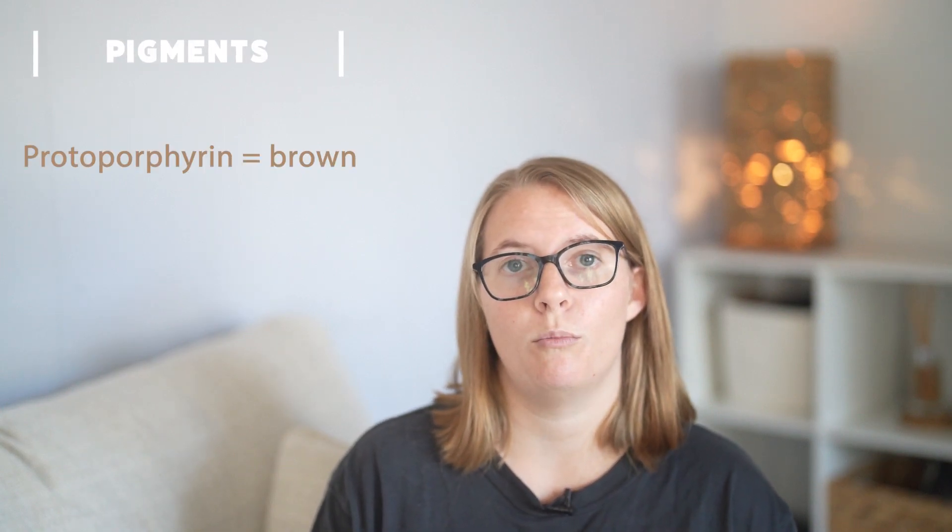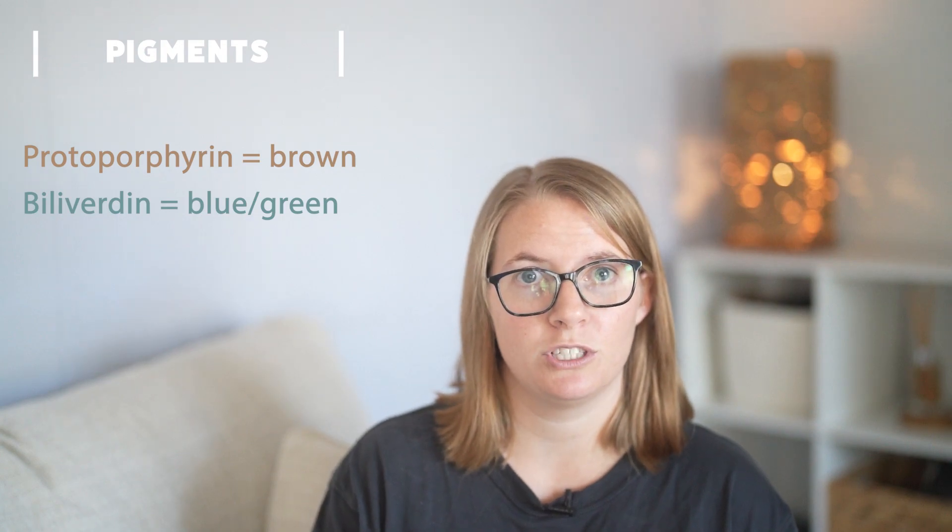The next thing to talk about is egg color. Whether you're new to chickens or not, you probably know about egg colors — white eggs, brown eggs, blue and green eggs. The genes for those egg colors are found on the chromosomes, and they tell the chicken's body whether to make brown, green, or white eggs. White is really just an absence of pigment. The two pigments that contribute to egg color are protoporphyrin, which is the brown pigment, and biliverdin, which is the green-blue pigment.